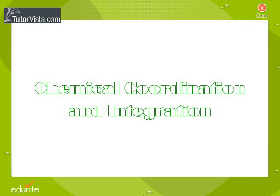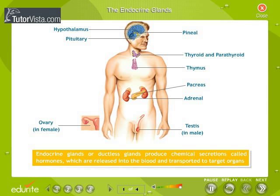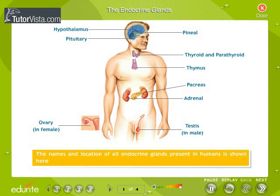Chemical coordination and integration: the endocrine glands. Endocrine glands, or ductless glands, produce chemical secretions called hormones, which are released into the blood and transported to target organs. Hormones are defined as non-nutrient chemicals which act as intercellular messengers and are produced in trace amounts. The names and locations of all endocrine glands present in humans are shown here.